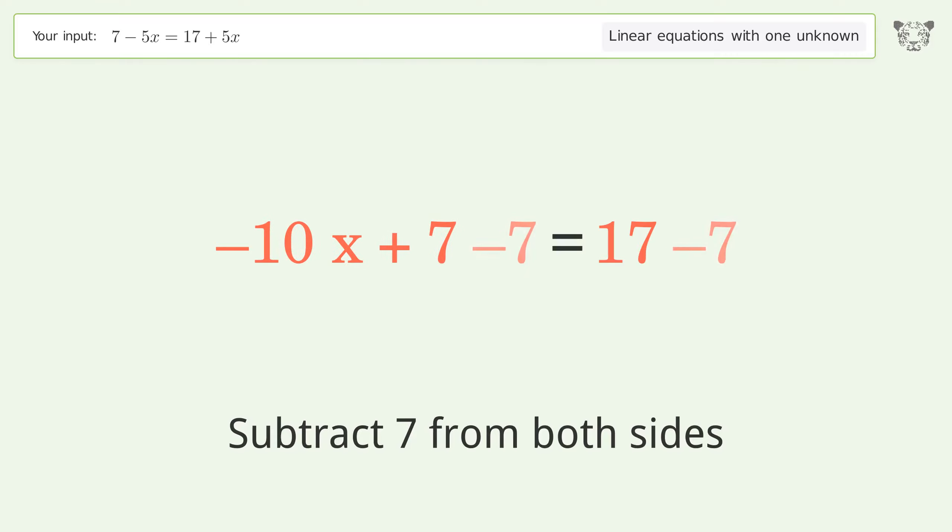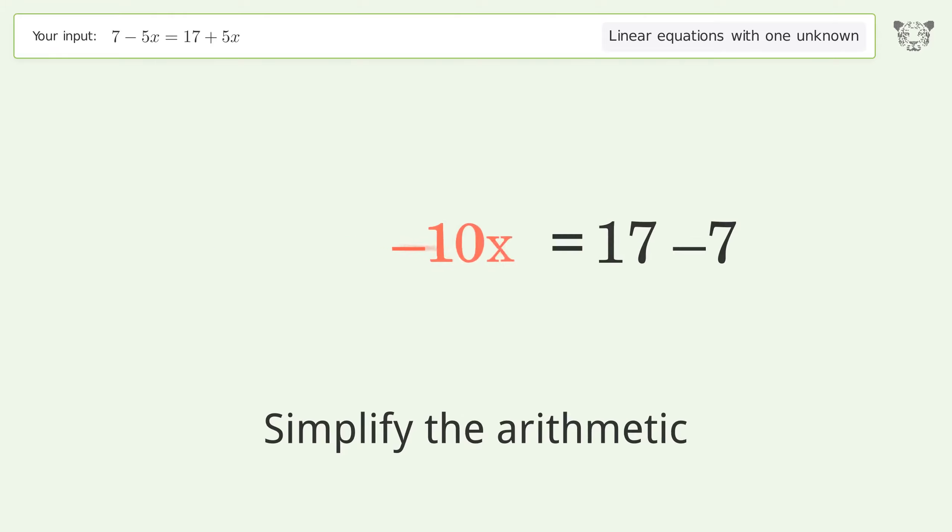Group all constants on the right side of the equation. Subtract 7 from both sides. Simplify the arithmetic.